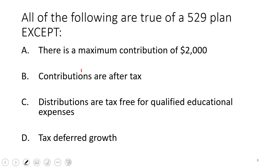All of the following are true of a 529 plan except — high probability you'll get a question contrasting a 529 with a Coverdell. Take notes on this. The $2,000 annual contribution limit is for a Coverdell, not a 529. The 529 allows you to put more money aside.